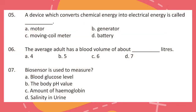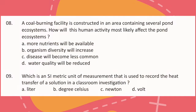Question 5: A device which converts chemical energy into electrical energy is called dash. Question 6: The average adult has a blood volume of about dash liters. Question 7: Biosensors is used to measure?